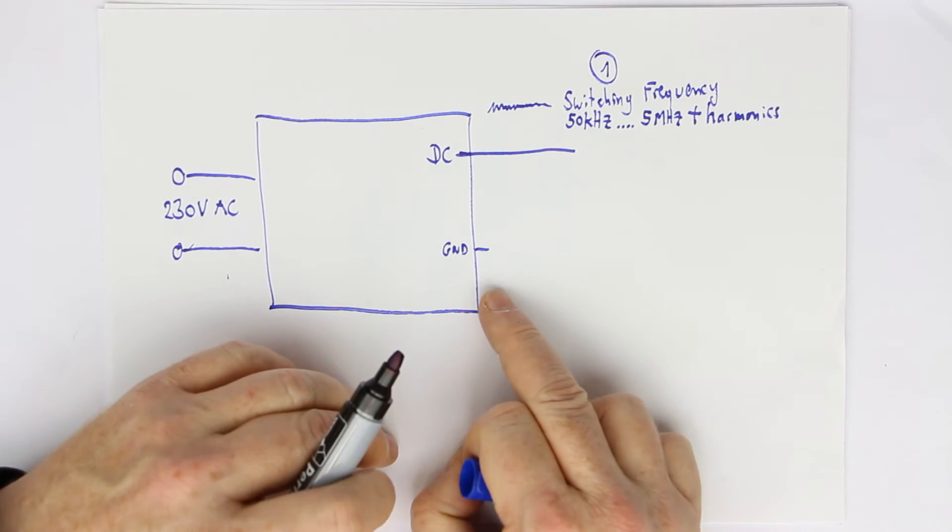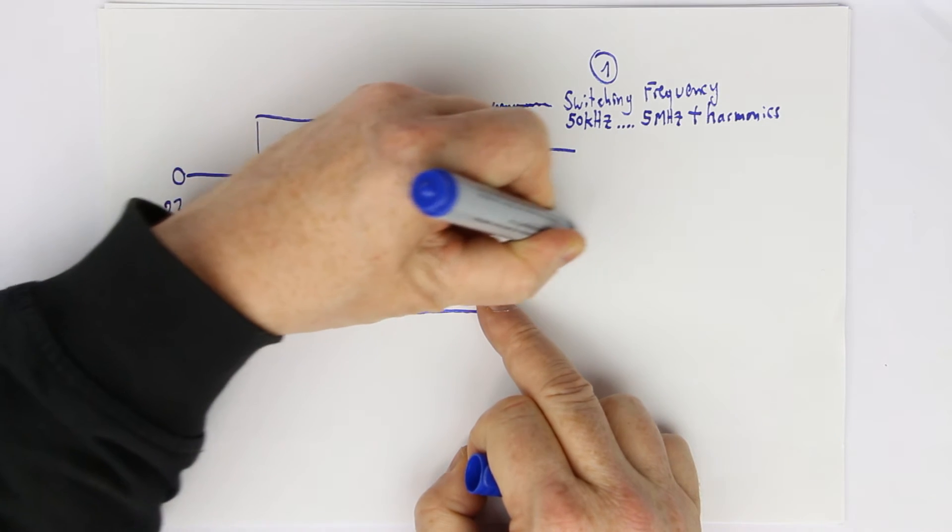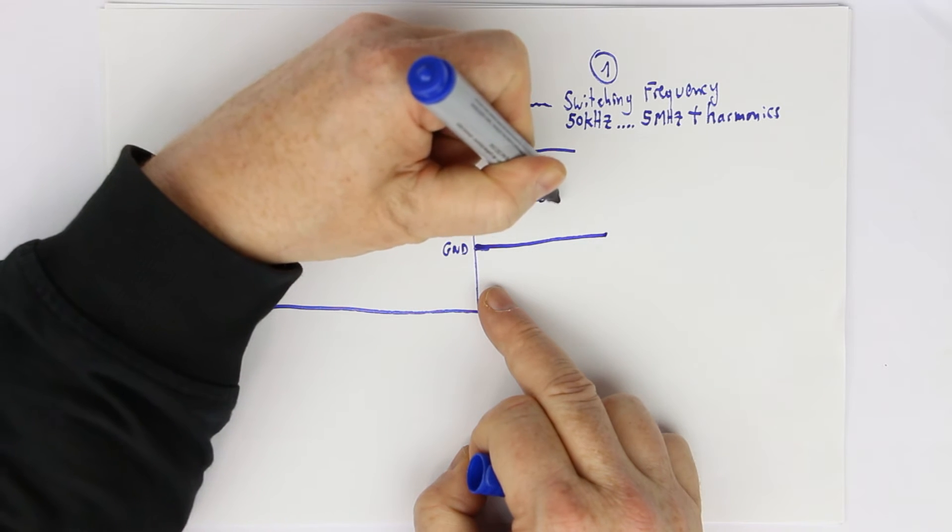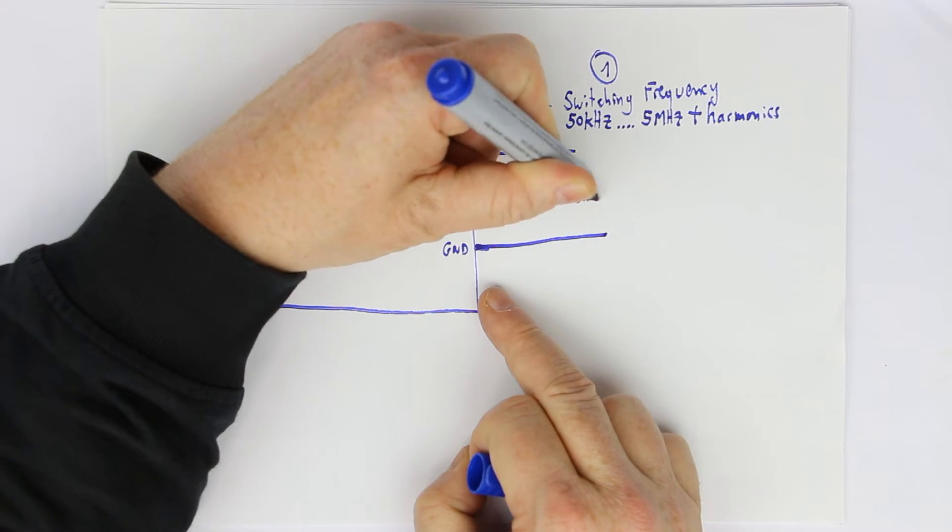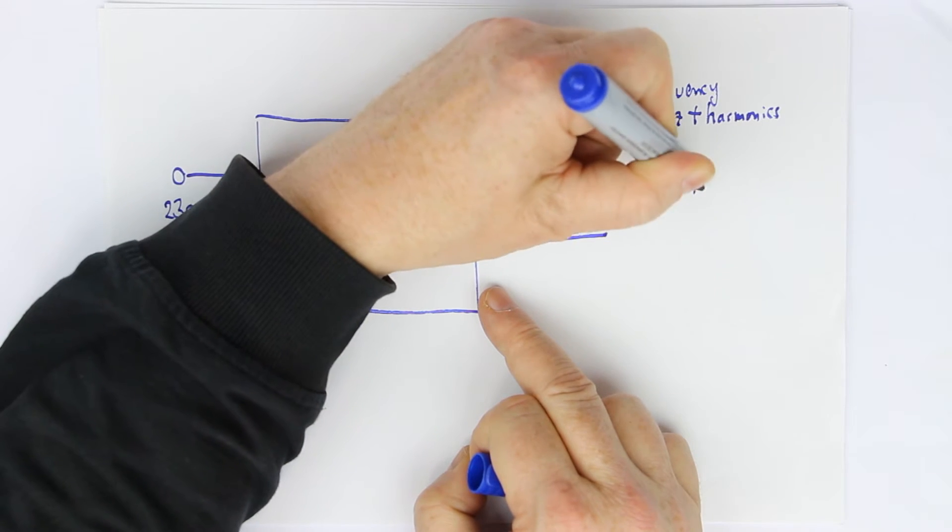A second source which is not so much known are so-called common mode interference or common mode signals. Now, what is that?